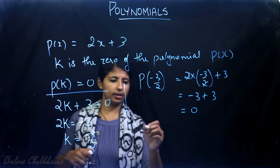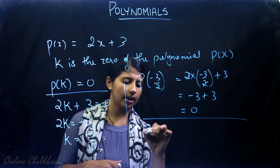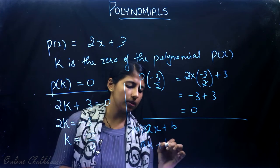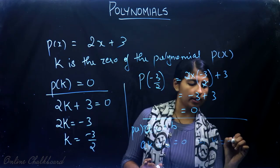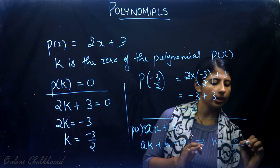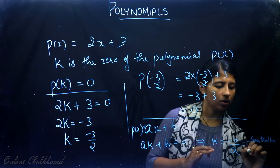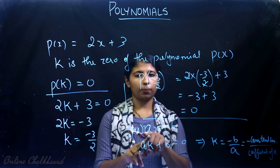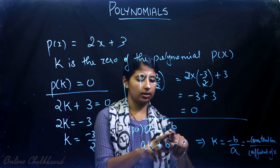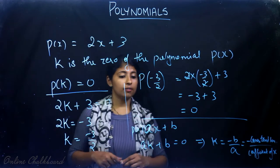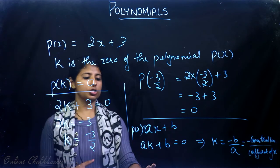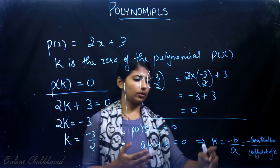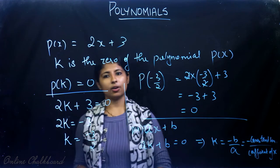In general for a linear polynomial ax + b, if k is the zero then ak + b = 0, so k = −b/a. This is the negative of the constant term divided by the coefficient of x. So we have found the relation between the zero of a linear polynomial and the coefficients of its terms.